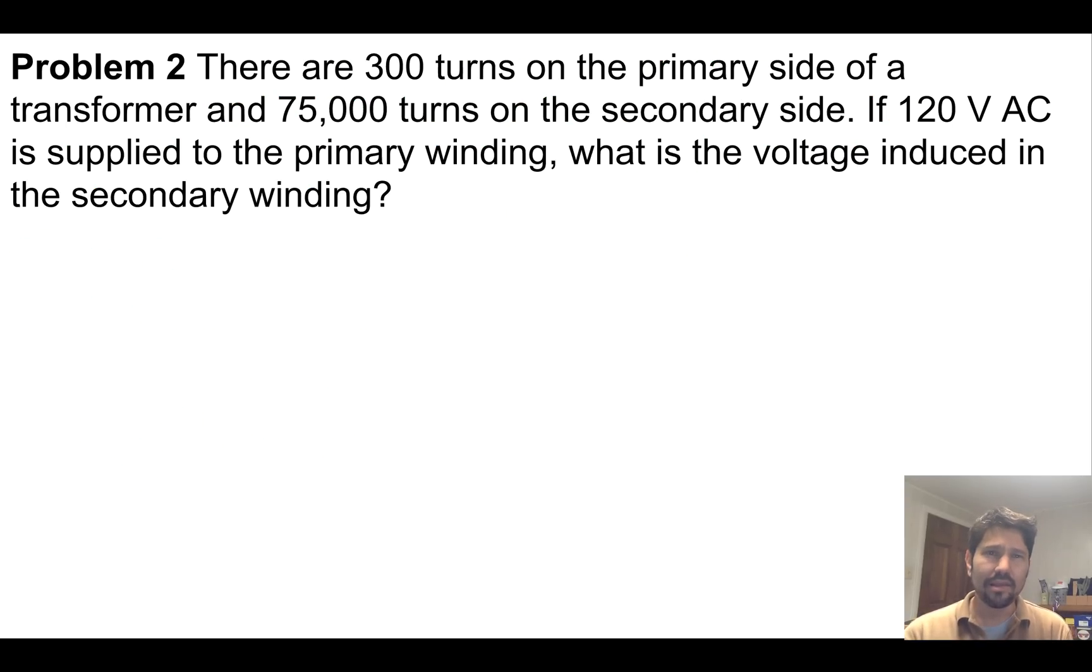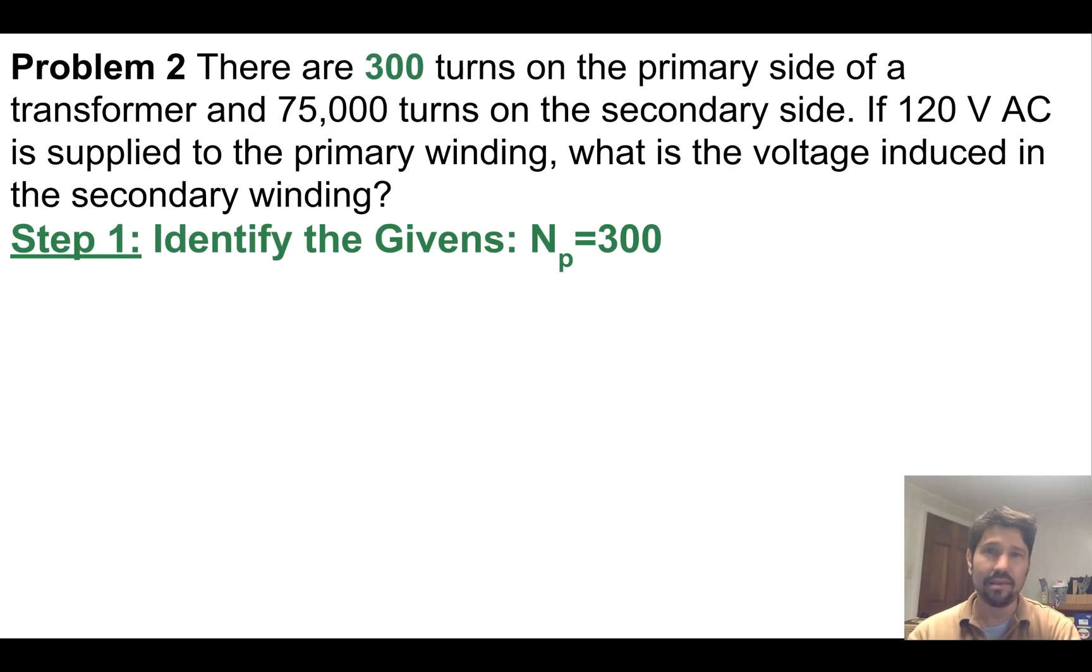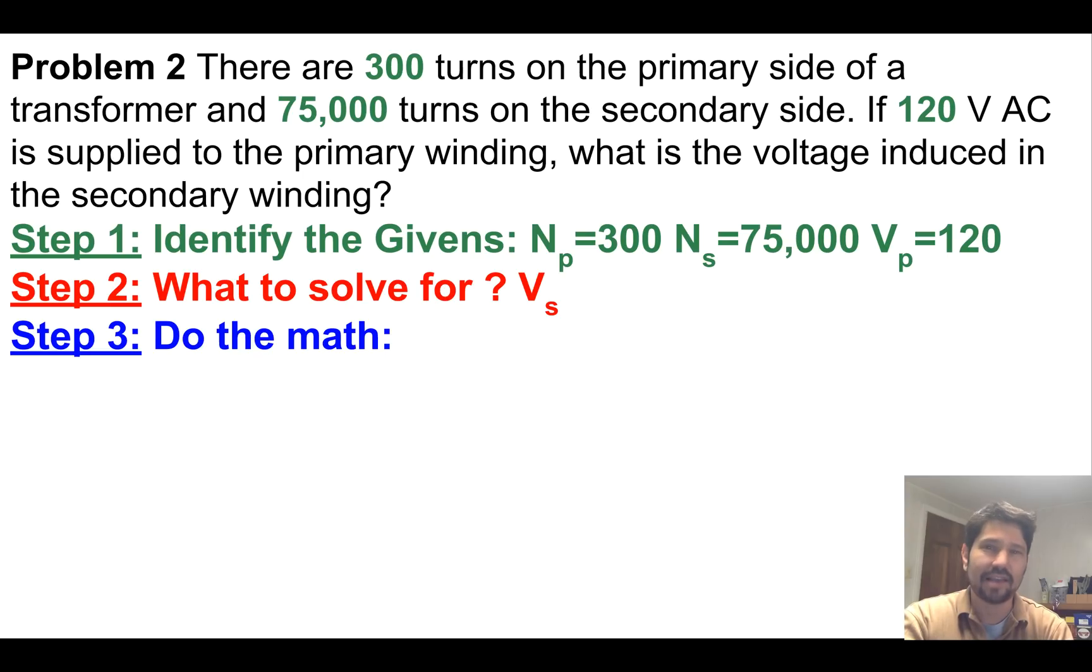Our second problem: There's 300 turns on the primary side of a transformer and 75,000 turns on a secondary side. If 200 volts AC is supplied to the primary, what is the voltage induced in the secondary winding? Our givens are NP primary side is 300 turns, NS secondary side is 75,000 turns. Must be a step-up transformer. We're going to expect more voltage and our voltage going in is 120. If it gave us 10 volts DC we wouldn't get anything out because these things only work on AC. We're solving for the secondary side winding.